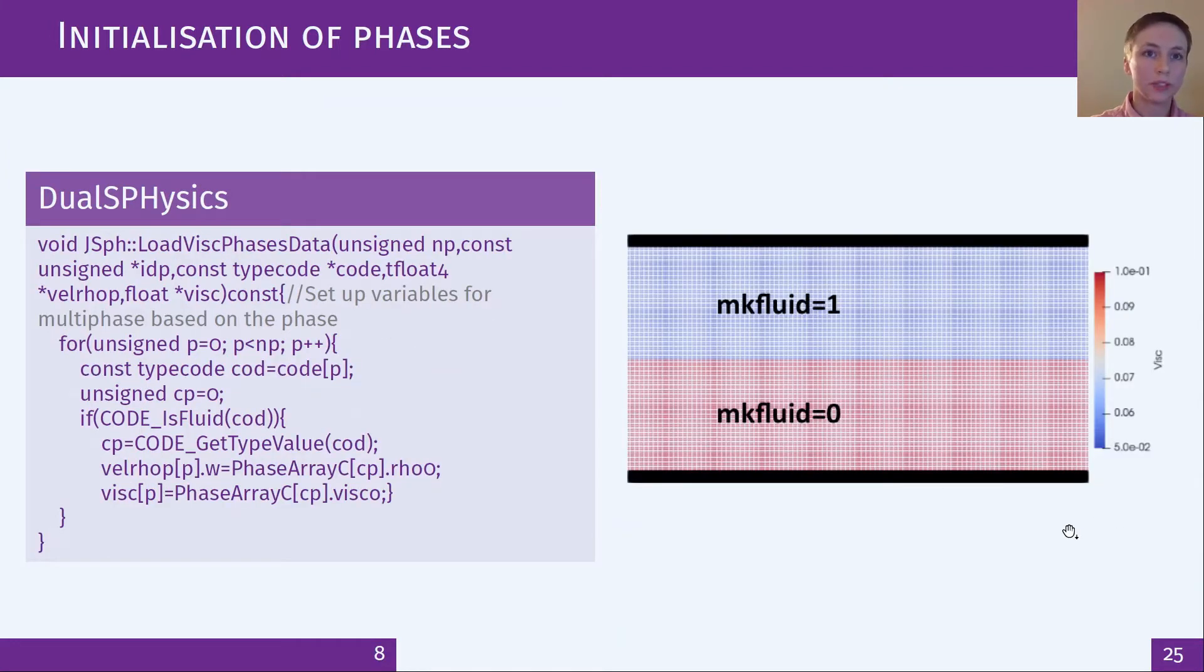Next the phases must be initialized in DualSPHysics. So we loop over all the particles, look up what phase they're in and then set the density and the viscosity according to their phase. The figure on the right here shows that the viscosities have been applied to each phase as in the xml example with mk fluid 0 having viscosity 0.1 and mk fluid 1 having viscosity 0.05.